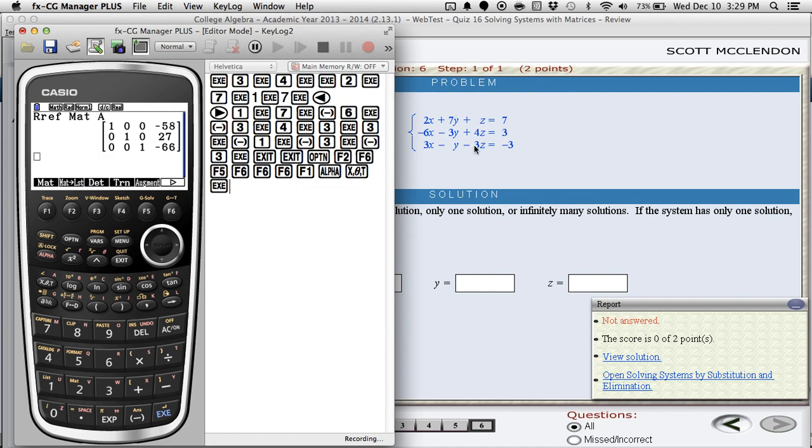There's a Z over here in the last column. So there's a 1 right here in the last column. So Z is equal to negative 66. So you say X equals negative 58, Y equals 27, Z equals negative 66.